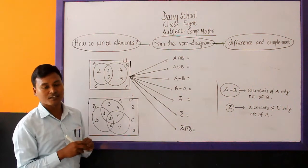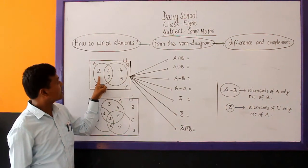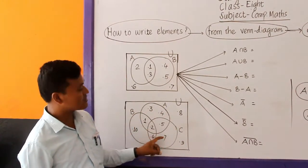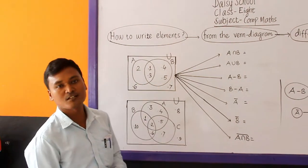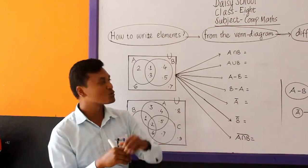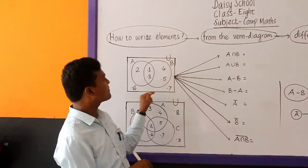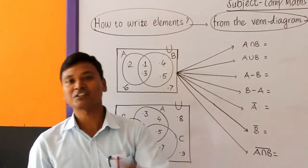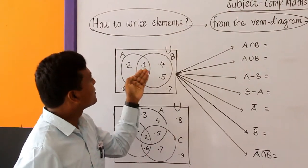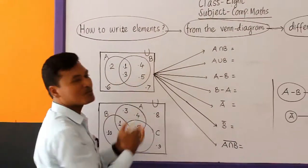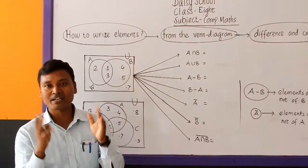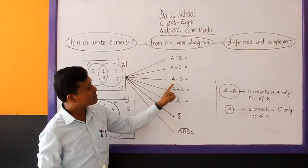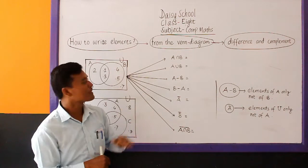I have drawn two Venn diagrams here, A and B. In the first Venn diagram we have A and B are overlapping sets. In the second Venn diagram, I have drawn three subsets of universal set. We have some elements also. But today the main thing, we are reading how to write the elements of the given set directly from the given Venn diagram. This will be better for students of class 7 as well.